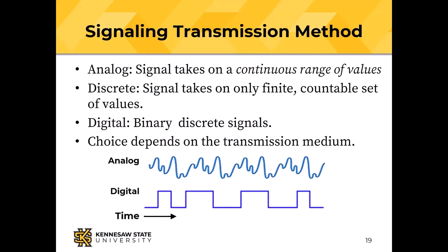Transmission methods: analog is a continuous range of values; discrete signaling uses only a finite countable set of values; digital signaling is binary discrete — only two values, on or off, high or low. You can see both an analog waveform and a digital waveform on the slide.